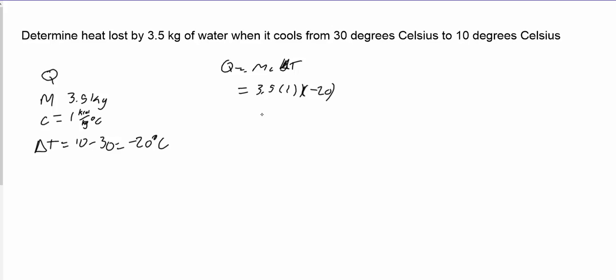And when we do that, we get negative 70 kilocalories. So negative 70 kilocalories means 70 kilocalories of heat is lost by the water to the surroundings.